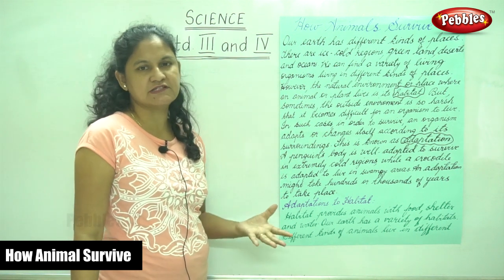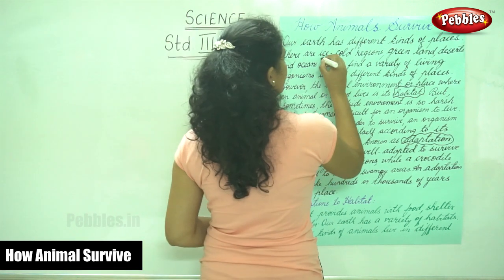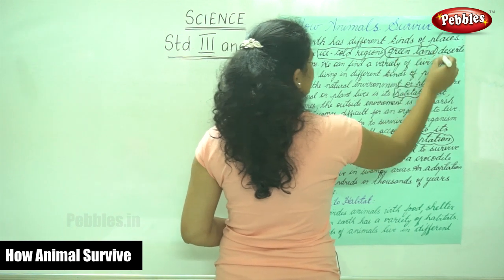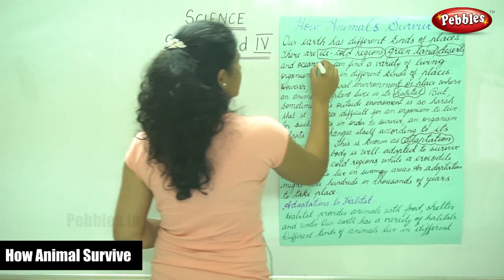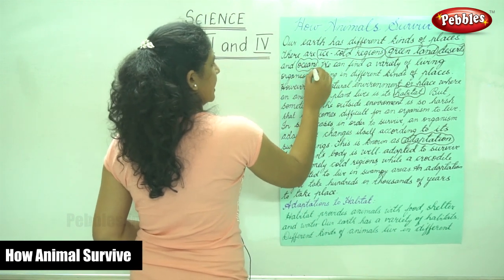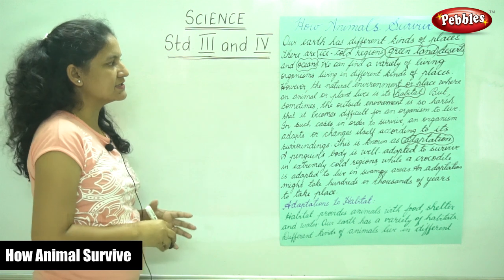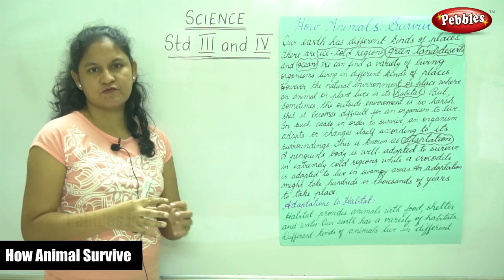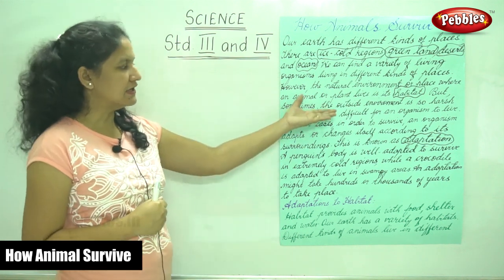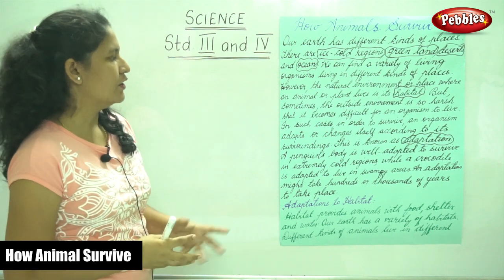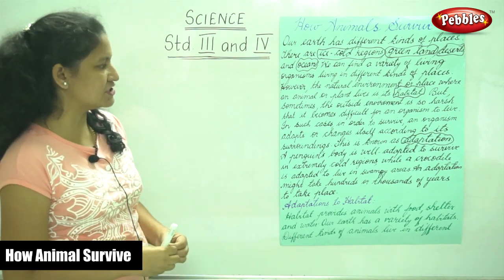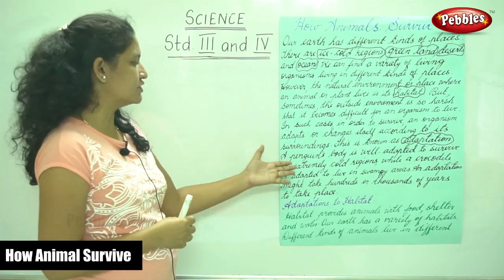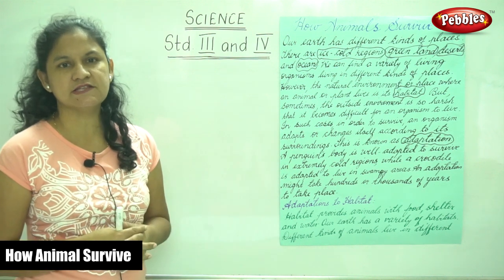Earth has different kinds of places: ice cold regions, green lands, deserts and oceans. There are variety of living organisms living in different kinds of places. The natural environment where a plant or animal lives is its habitat, and the process where an organism changes or adapts itself according to its surroundings is known as adaptation.